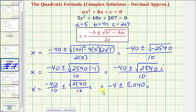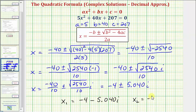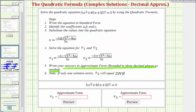Now, the homework does ask us to enter these in separately, so our first solution, x₁, is going to equal -4 - 5.040i. And our second solution, x₂, will be equal to -4 + 5.040i. So going back to the previous slide, we now have our two approximate solutions. I hope you found this helpful.